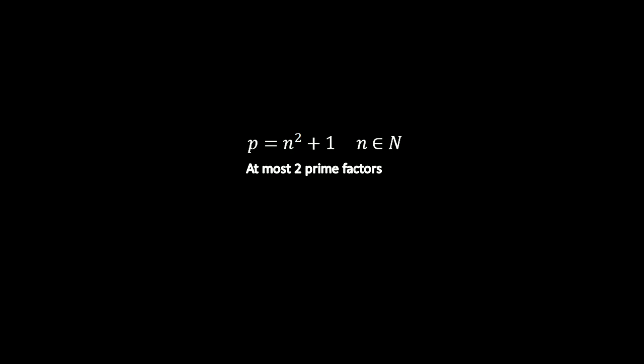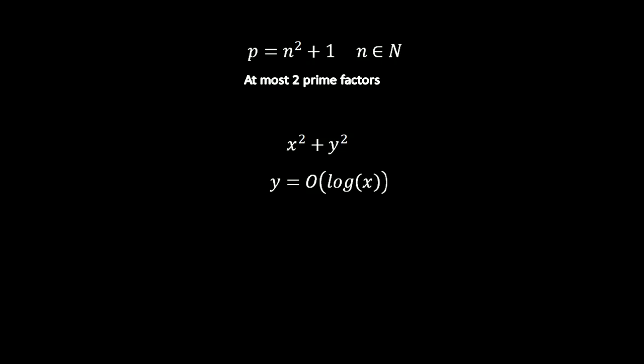Nesmit Hacheny proved that there are infinitely many primes of the form x squared plus y squared, where y equals O of log of x. We will get our conjecture when y equals 1 over here.